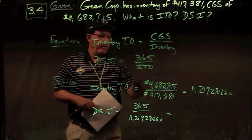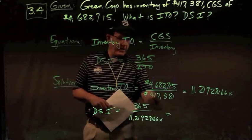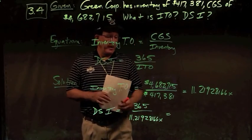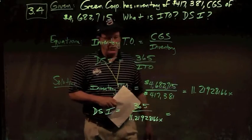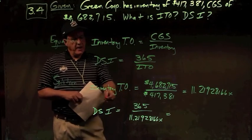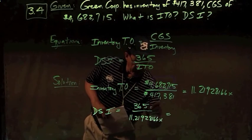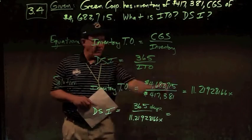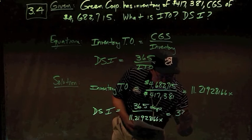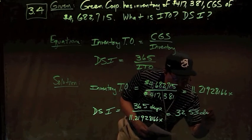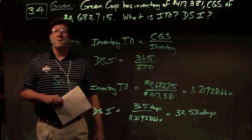Inventory turnover is $4,682,715 of cost of goods sold divided by $417,381 of inventory, giving 11.2193 times — inventory turns about 11.22 times per year. Day sales in inventory: 365 divided by 11.22 times gives 32.53 days on average that inventory is sitting on the shelf. There's your answer to problem number four.